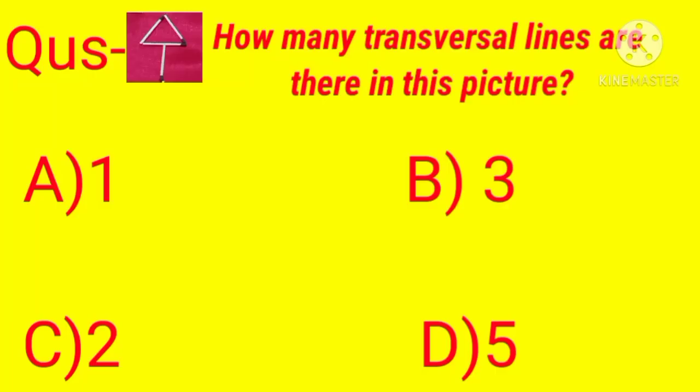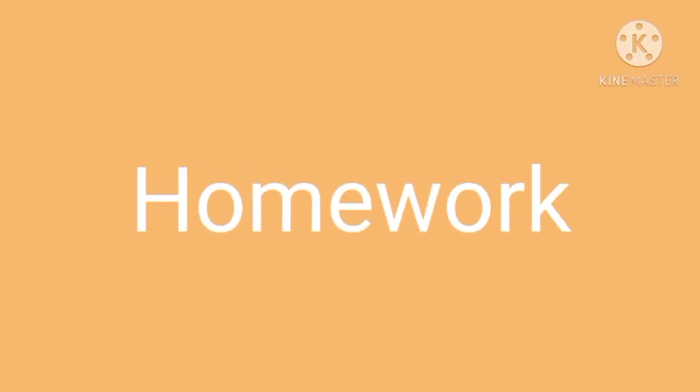Now it's time for a pass-related question. The question is: how many transversal lines are there in this picture? Option A: 1, Option B: 3, Option C: 2, Option D: 5. Dear students, the right answer is option C. Now, dear students, you have to play different games with the lines at home. Thank you.